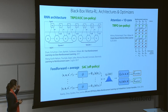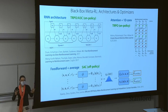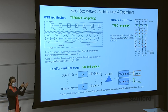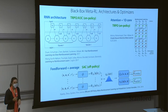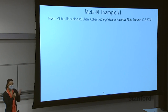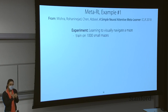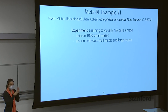One architecture note: instead of feed-forward and averaging over individual transitions, you can also run an RNN over transitions within an episode and then average across episodes — mixing and matching different components. As an example, the maze navigation experiment trains on a thousand different small mazes, then evaluates the algorithm's ability to quickly learn to solve new mazes — both small and large — at meta-test time.